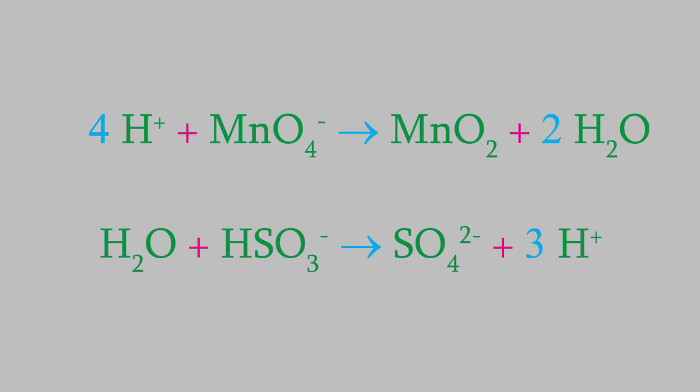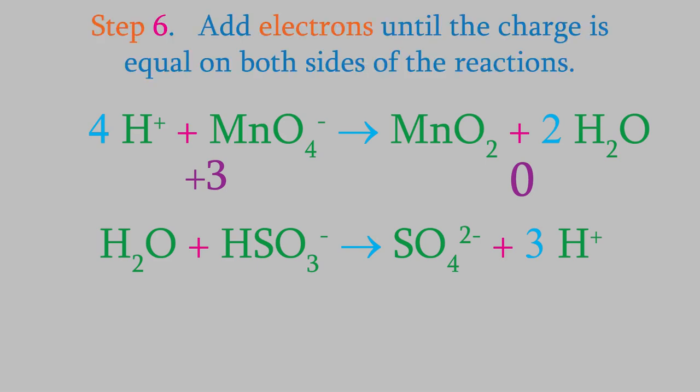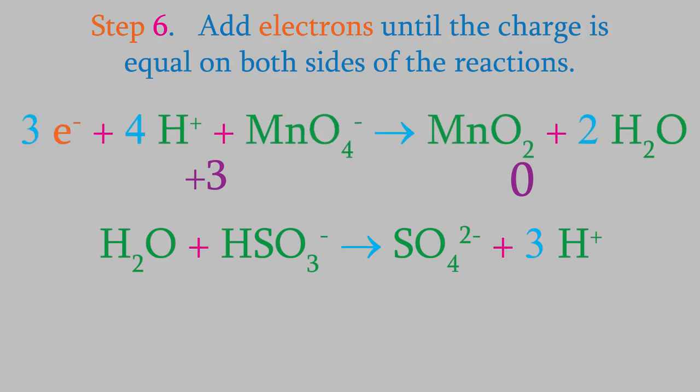Now all the elements are balanced, which means we're almost done. But as we saw in the last video, the charges might not be balanced. In the reduction reaction, there are 4 hydrogen ions and a permanganate ion on the left side, so the charge on that side is a total of plus 3. Meanwhile, there's a neutral manganese oxide molecule and 2 neutral water molecules on the right, so the charge on the right side is 0. In order to balance the charges, step 6 tells us to add electrons to the reaction. In this case, we'll need to add 3 electrons to the left side.